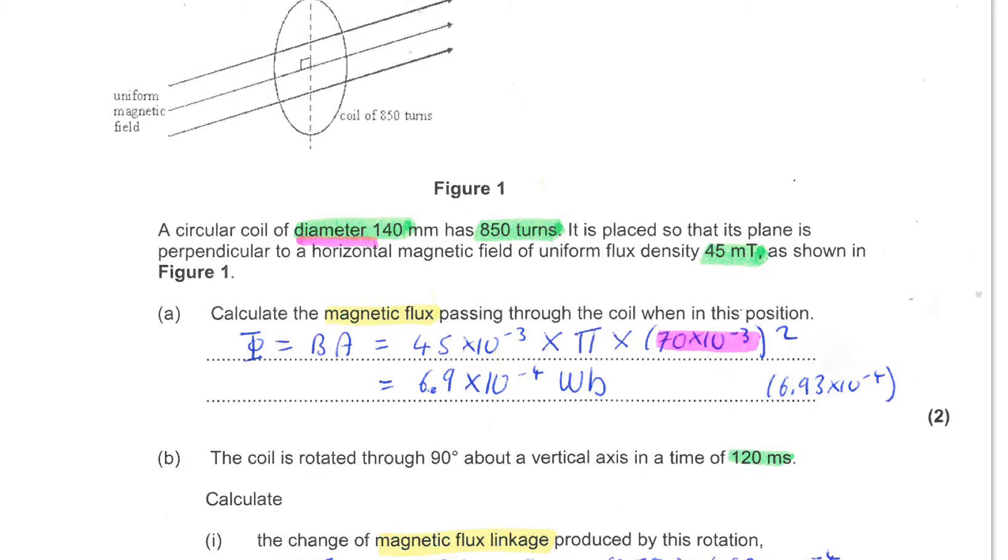This is shown in the diagram above. You're asked to calculate the magnetic flux passing through the coil when in this position. So, quite simply, the flux is given by the product of the flux density and the area.